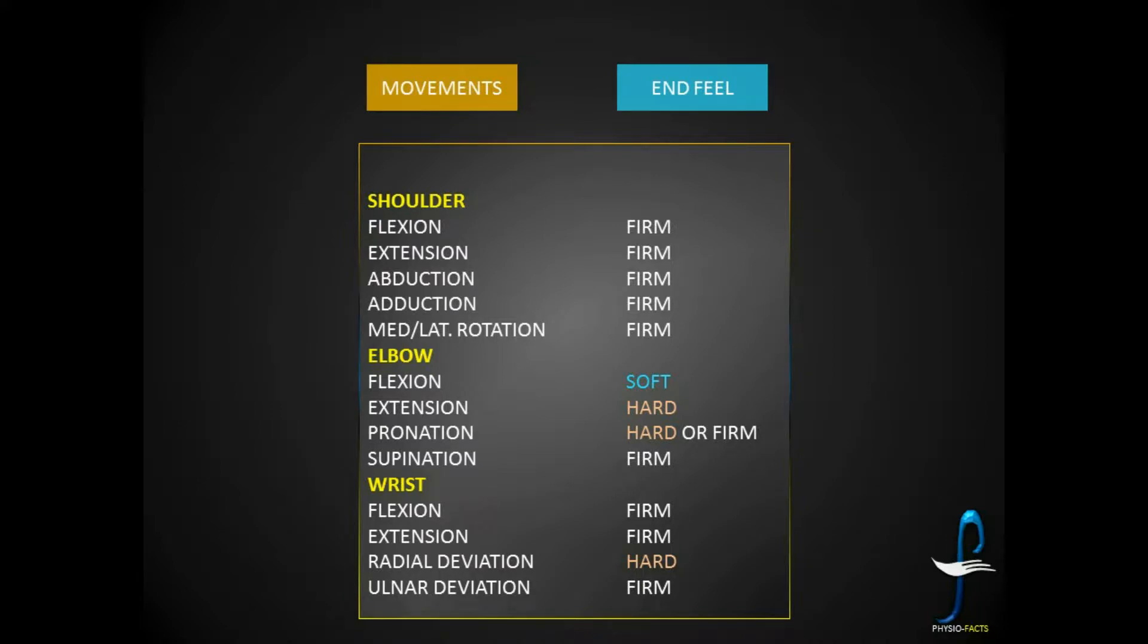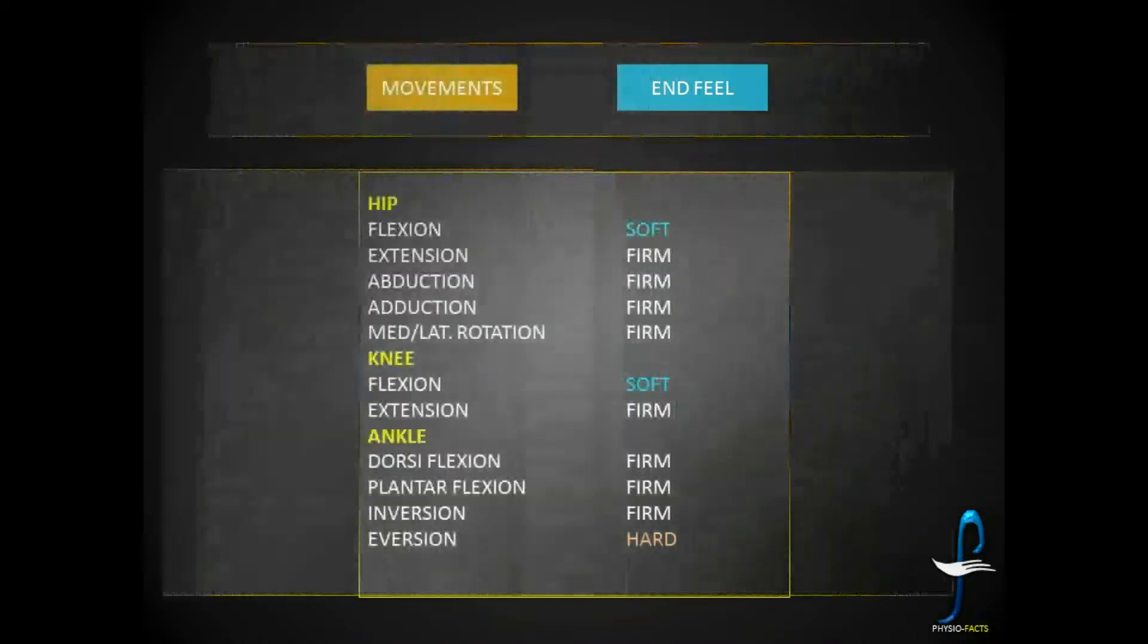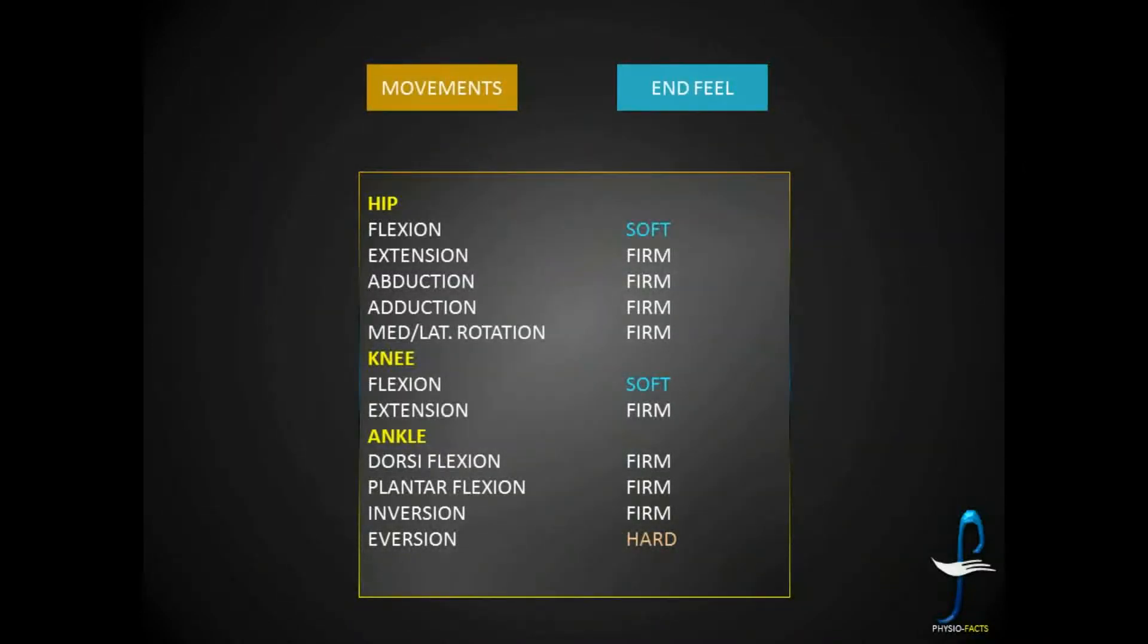So these are the interesting end feels in the upper limb. As I said before, most of our joint movements are giving firm end feel. Let us see only the other end feels in the lower limb. Hip flexion gives us soft end feel, soft tissue approximation. Knee flexion also shows soft end feel, soft tissue approximation.